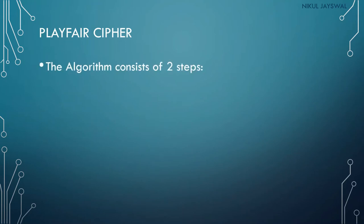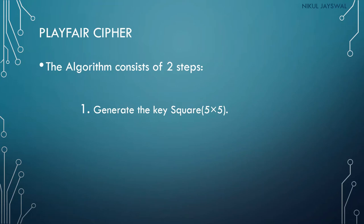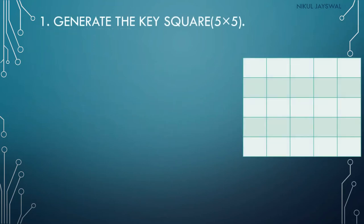The Playfair algorithm consists of two steps. First is generating a key square — a 5×5 matrix accommodating 25 characters. Normally the alphabet has 26 characters, but we place I and J in a single block, or we can eliminate one of them, to fit 25 characters in the grid.